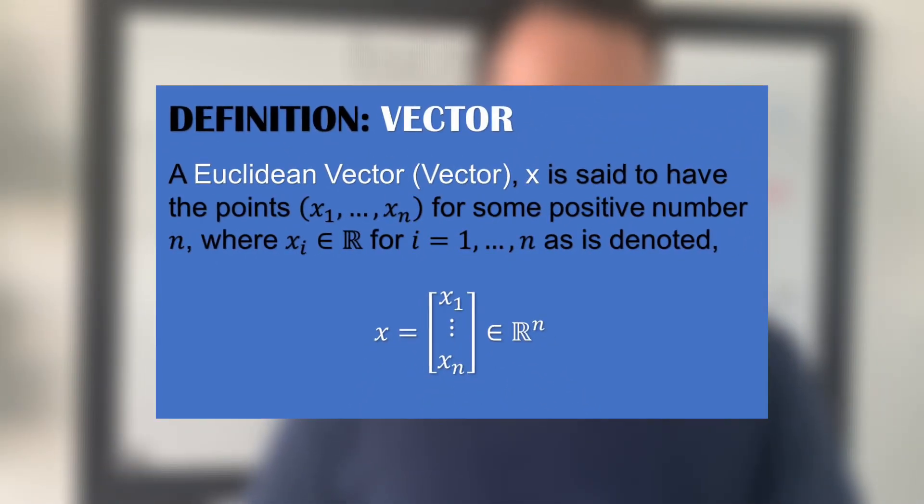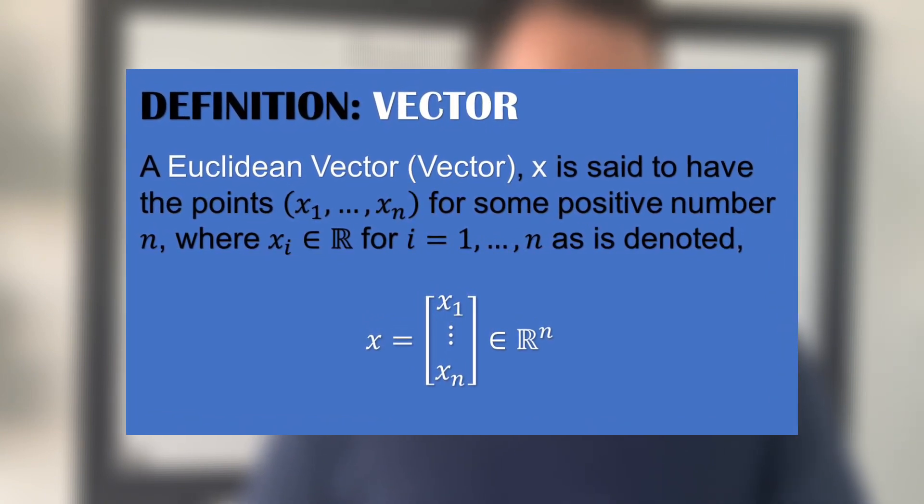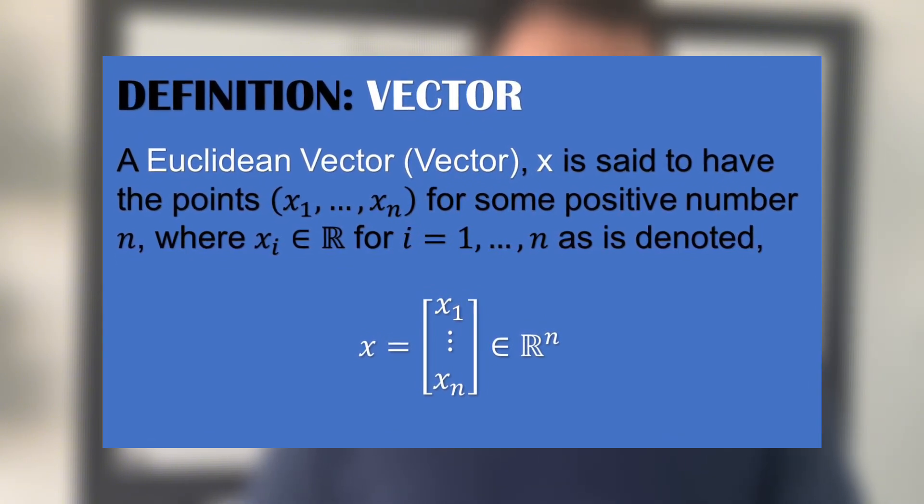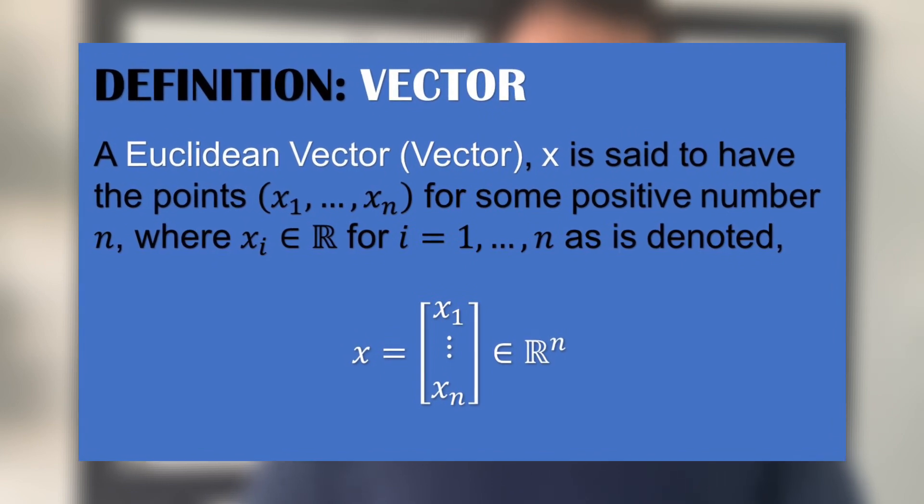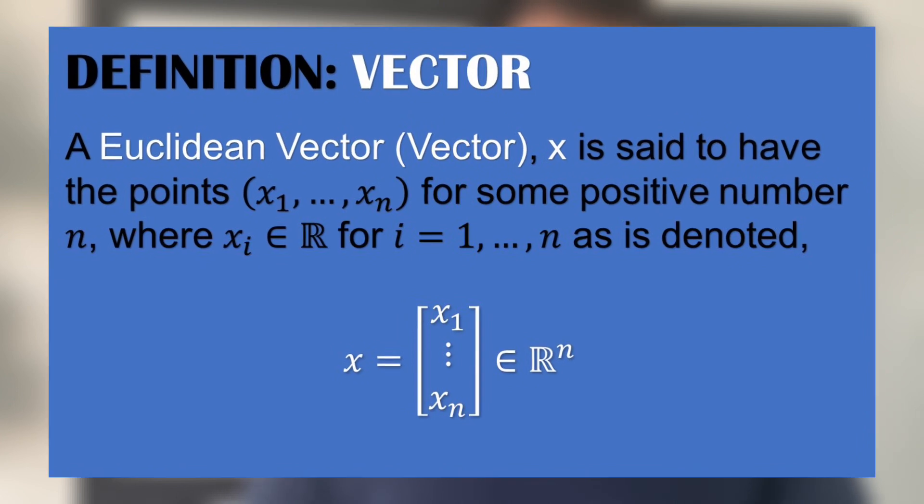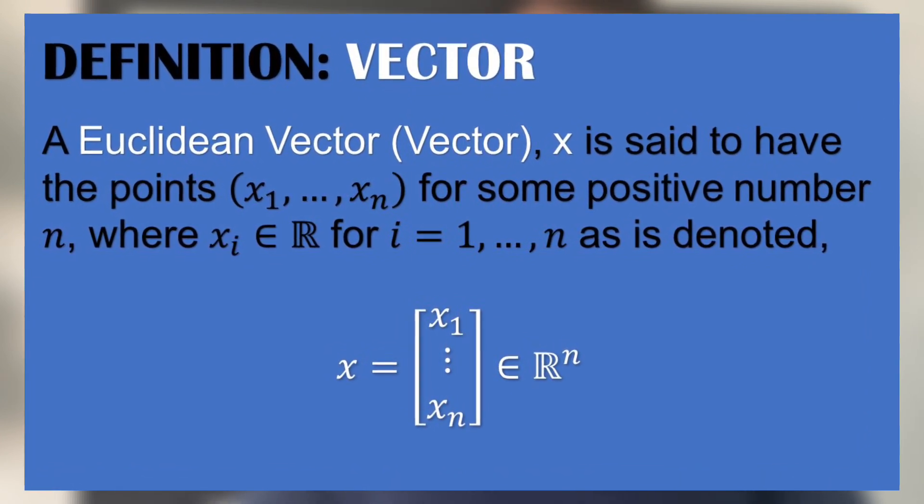A Euclidean vector, short-formed vector X, is said to have the points X1 to XN for some positive number N, where XI is an element of real numbers for all I from 1 to N, and is denoted X is an element, square brackets, X1, XN, and is an element of RN.